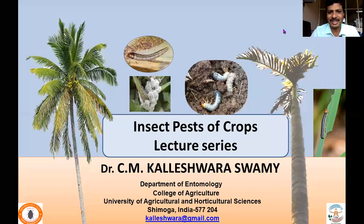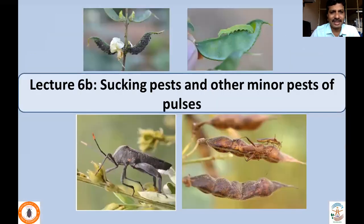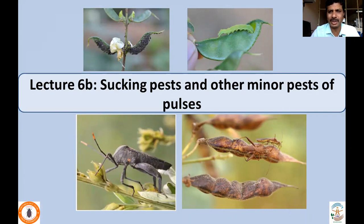Hello everyone, welcome back to the Insects Pests of Crops lecture series. In this lecture, under lecture 6b, we'll be discussing sucking pests and other minor pests of pulses. In the previous lecture, we were discussing the pod borer pests of pulses. Now, if you look at the sucking pest complex, which is mainly contributed by pod bugs.